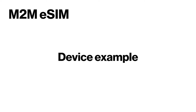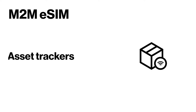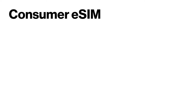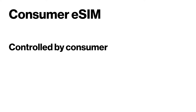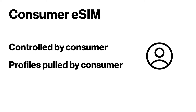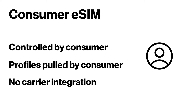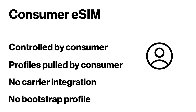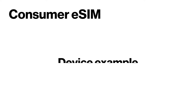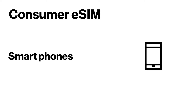Example devices for the M2M solution are asset trackers. With the Consumer solution, it is controlled by the consumer, profiles are pulled by the consumer, integration between carriers is not required, and a bootstrap profile is not required. Example devices for the Consumer solution are smartphones.